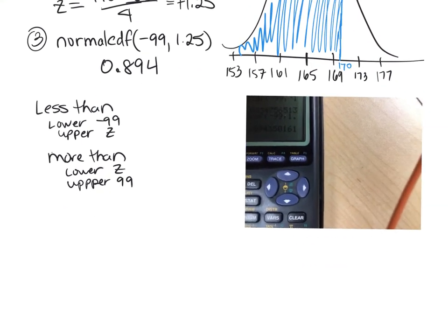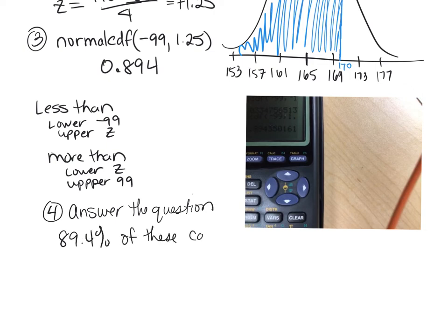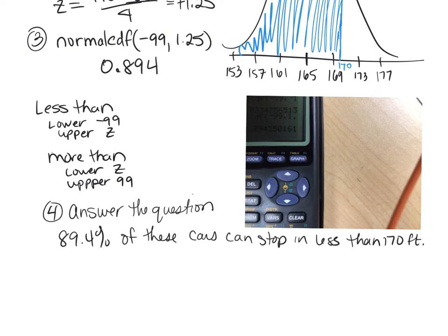The question asked for a percent, so the answer is 89.4% of these cars can stop in less than 170 feet. Statistics is more about understanding what your final answer means in context than just computing numbers. What does that percentage mean in the context of the information?